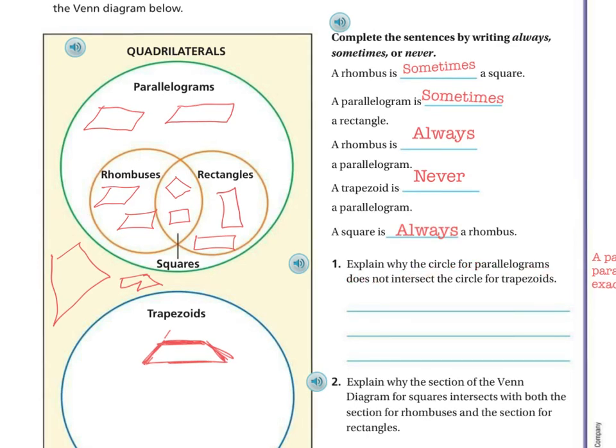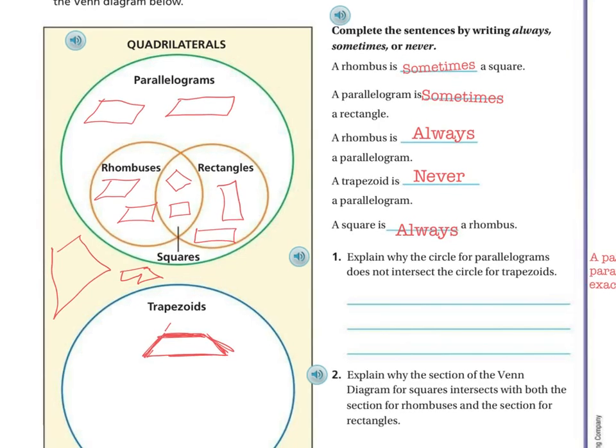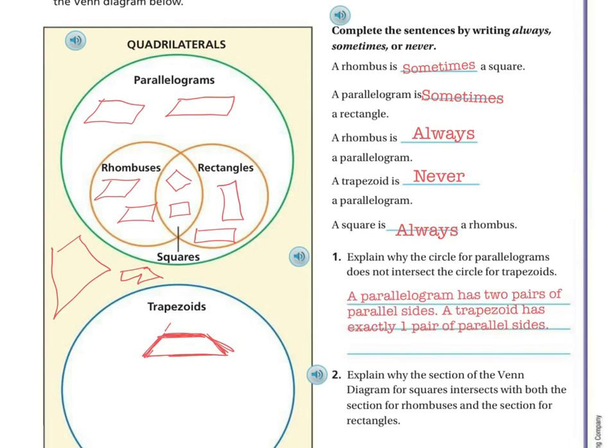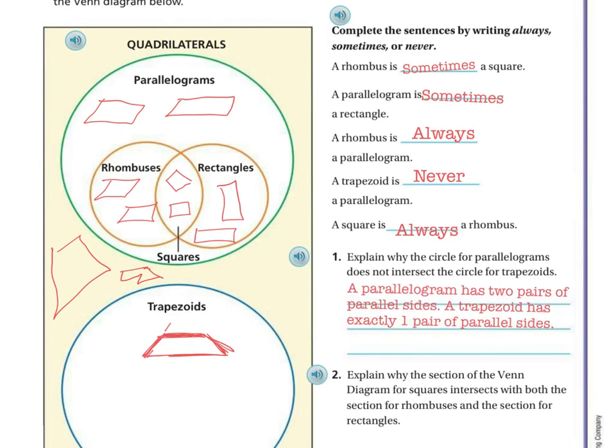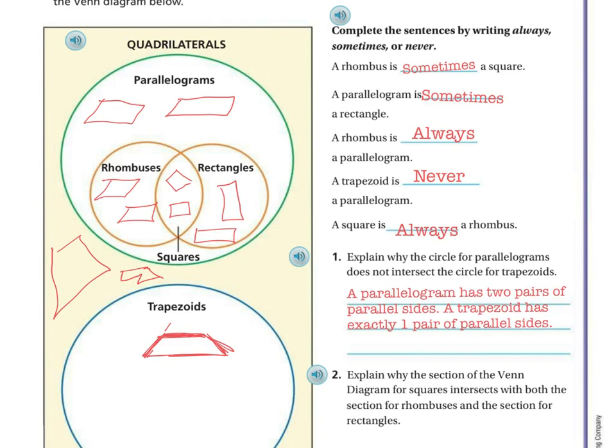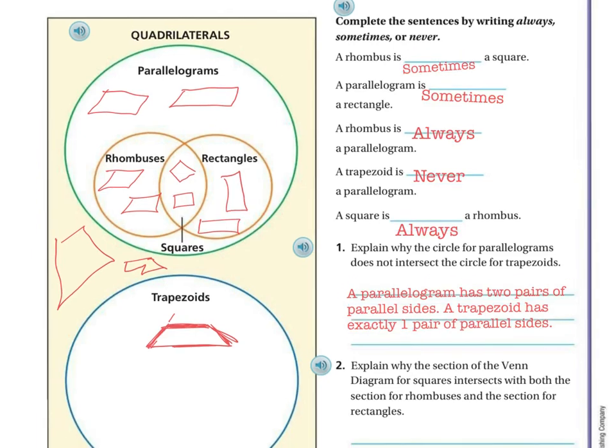But let's do this next one. It says, explain why the circle for parallelograms does not intersect the circle for trapezoids. And the reason, I already explained it over here, but a parallelogram has two pairs of parallel sides and a trapezoid only has one pair. So if you look here, that one and that one can go on and on forever without meeting. Same here. That side and that side can go on and on without meeting. But in a trapezoid, only these two sides are parallel, and these two sides are going to eventually intersect.